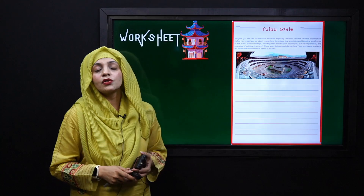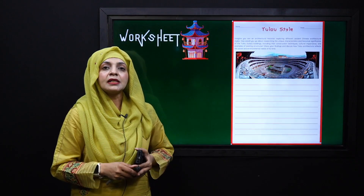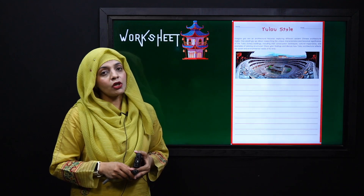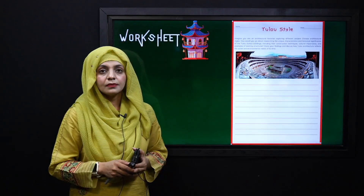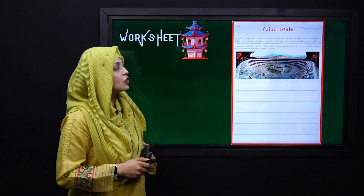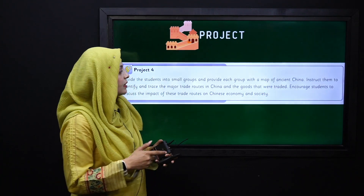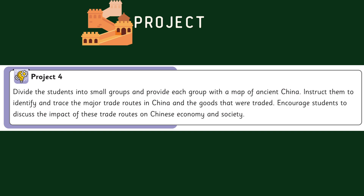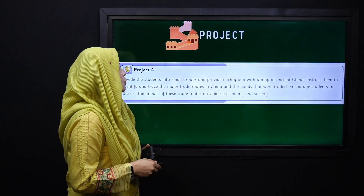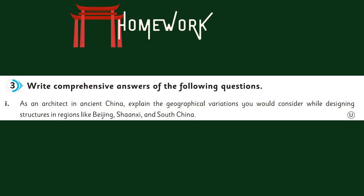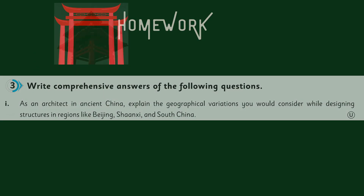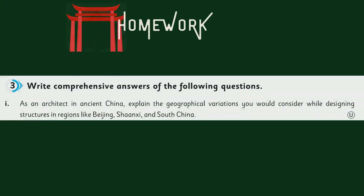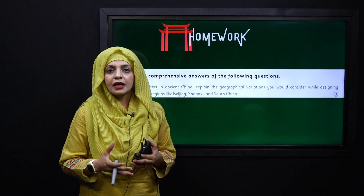For practice, you can download this worksheet from the description box below this video, or you can get it in print form from your teacher. Pause the video and quickly finish the worksheet. I hope everybody has finished the worksheet. Now quickly note down the homework — you will complete Exercise 3, question number 1. My dear students, this was your homework. Aaj hum ne Chinese architecture ke baray mein parha. I hope you have enjoyed and completely understood the lesson. Keep everybody around you safe. Have a good day. Thank you so much.